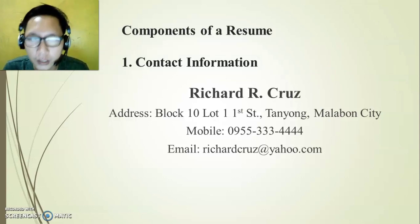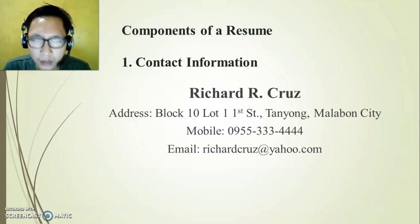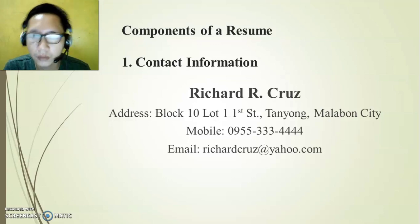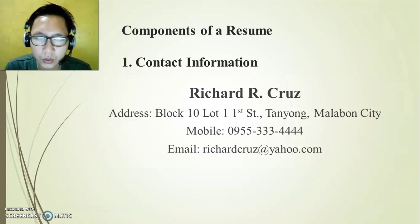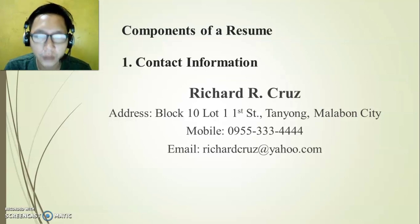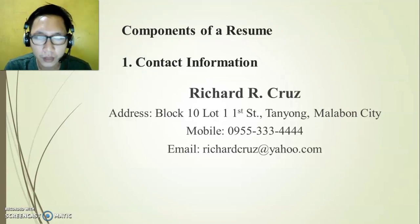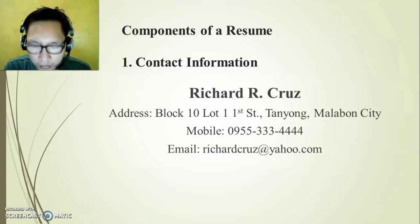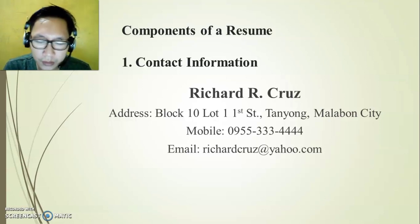Number one, or the first part, is contact information. When we say contact information, include your name — for example, the name is Richard Arcus. Then your address — for example, Block 10, Lot 1, 1st Street, Tanyong, Malumon City — a complete address. Next will be your contact number: cell phone number, mobile number, or landline. Make sure it is always active so they can call you anytime. Next is your email address — for example, richardcluse@yahoo.com.